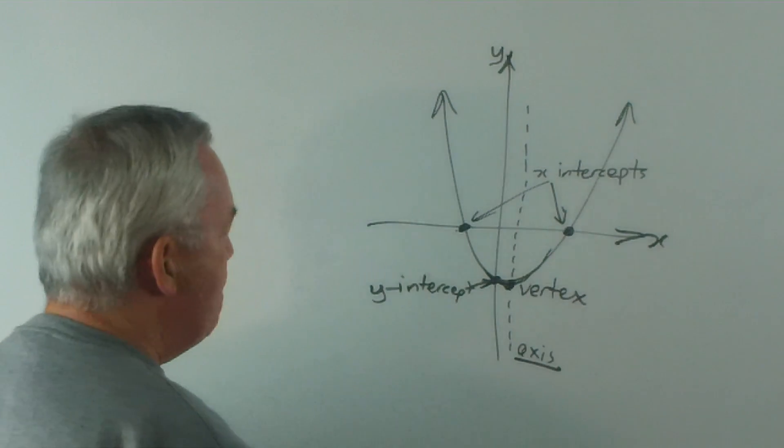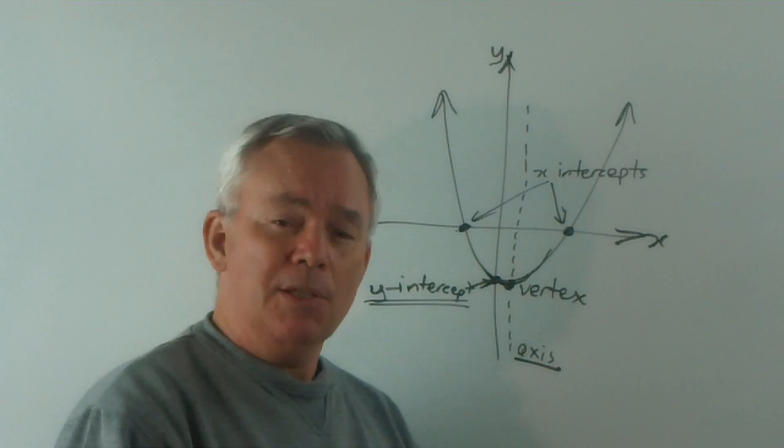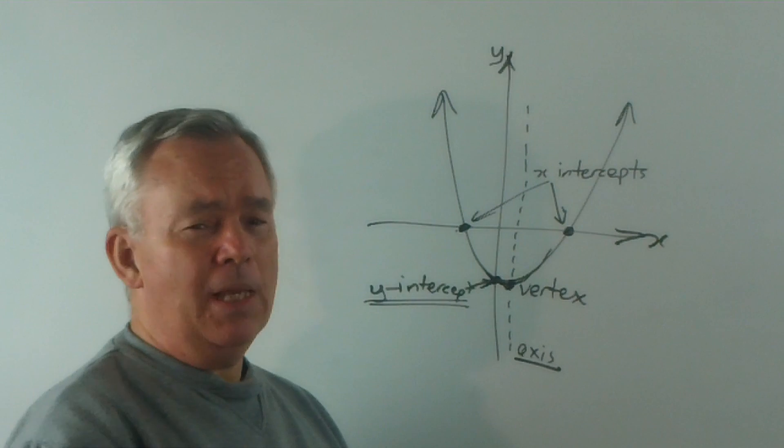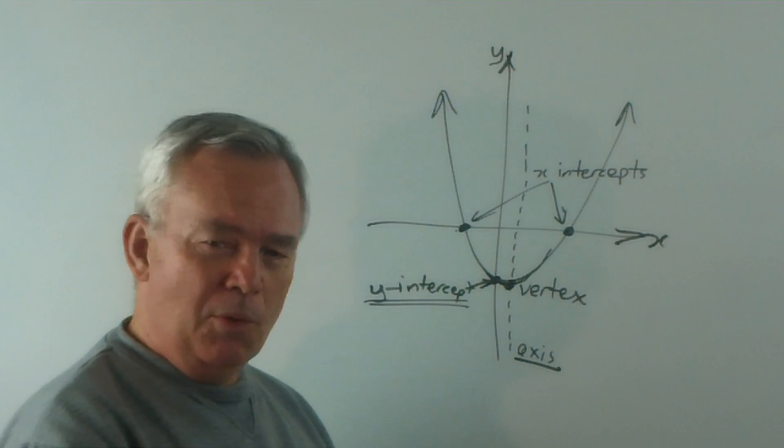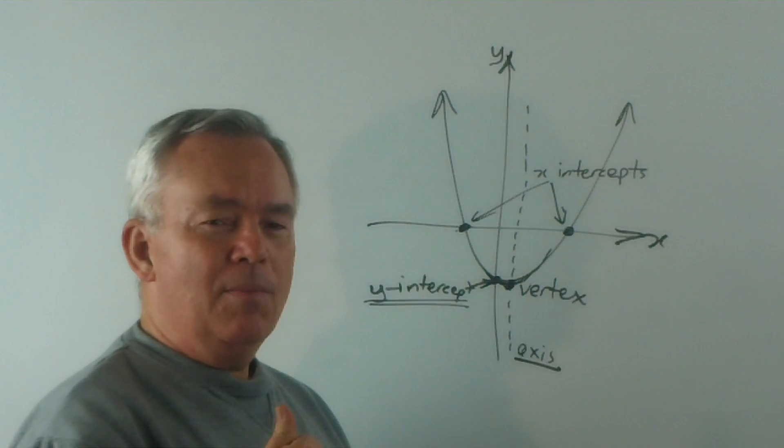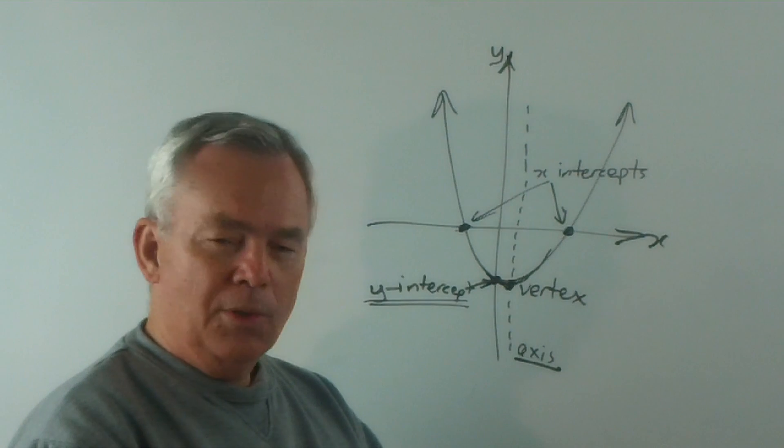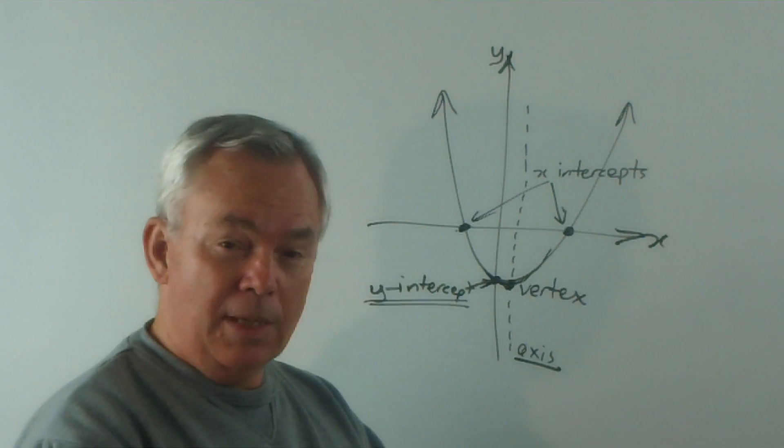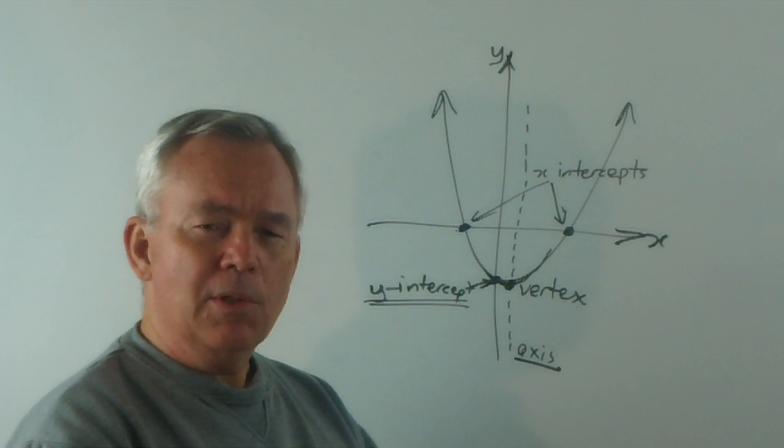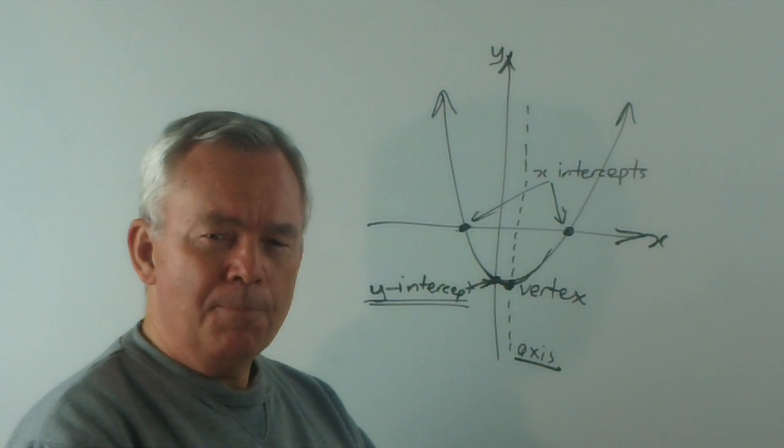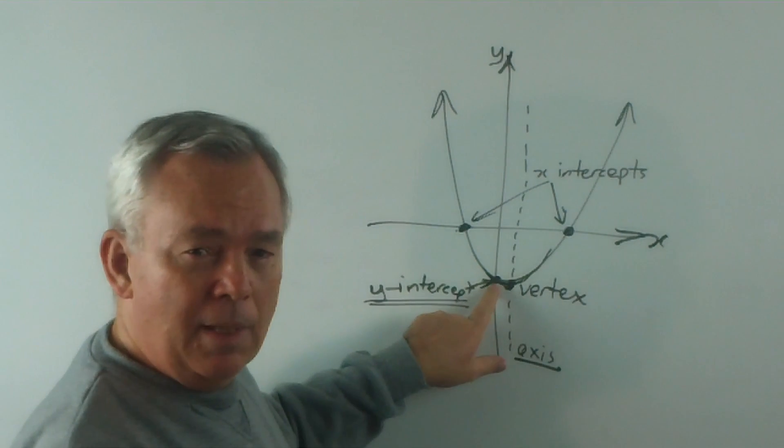In this particular video I'm going to talk about finding the y-intercept. It's probably the easiest thing to find, and I hesitated about making a video about it, but I think it's important because some students have struggled with it and because not every quadratic is written in the same form. I'm going to introduce you to the three basic forms that quadratic equations are written in and how we find the y-intercept in every case.